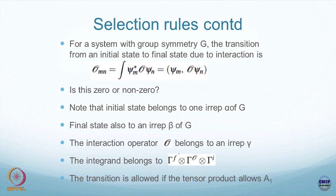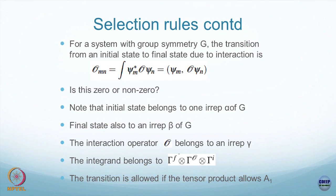The initial state belongs to one irreducible representation (EREP), call it alpha. The final state belongs to another EREP, call it beta — alpha and beta could be the same or different. The interaction operator also belongs to one of the EREPs, since the interaction operator is associated with an observable.